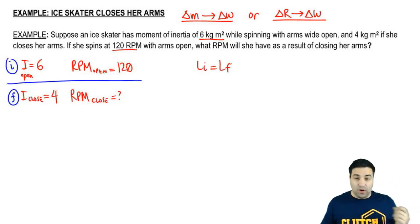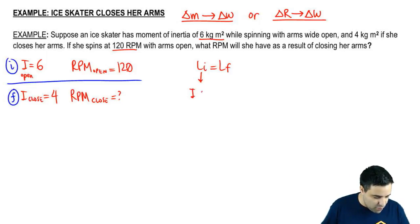In this case we have one person, so it's just going to be I omega for one person. I initial omega initial equals I final omega final.